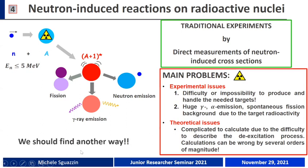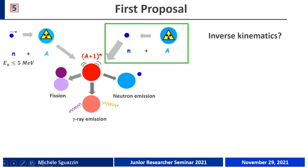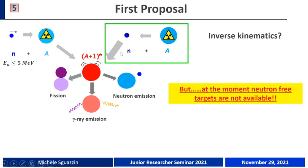What is clear is that in order to measure this neutron-induced reaction cross-section, we should find another way. One option is to reverse the kinematics — we take our heavy target and accelerate this radioactive nucleus, which solves the problem of target radioactivity. However, in this specific case of neutron-induced reactions, if we want to use inverse kinematics, we should provide a neutron-free target, and at the moment this kind of target is not available.